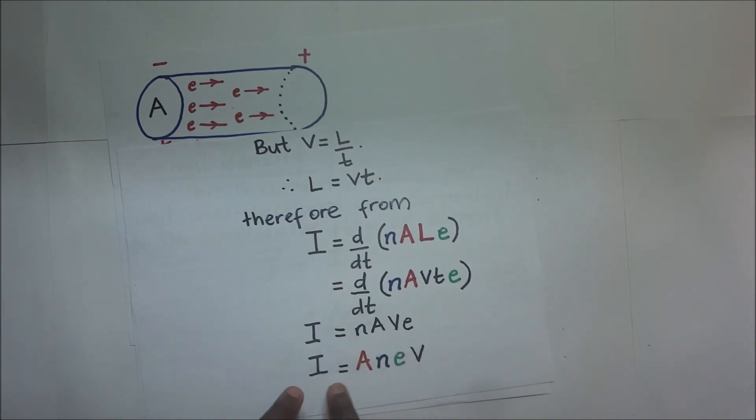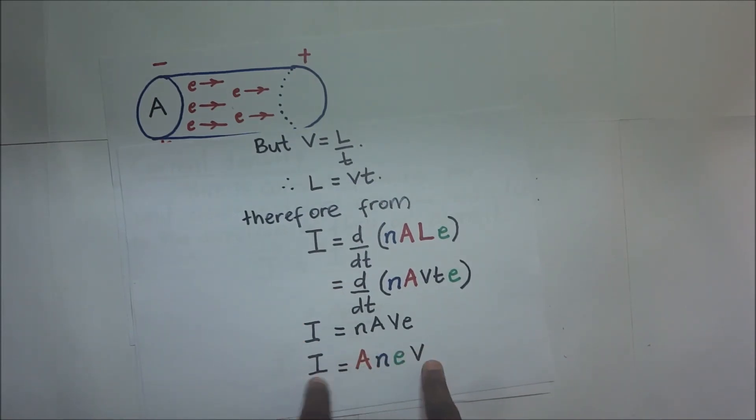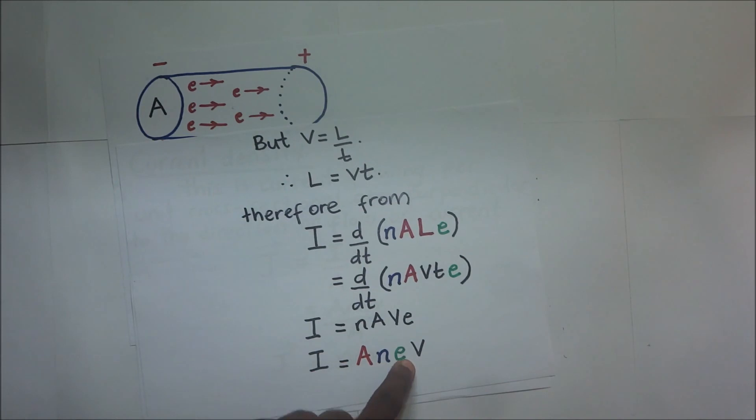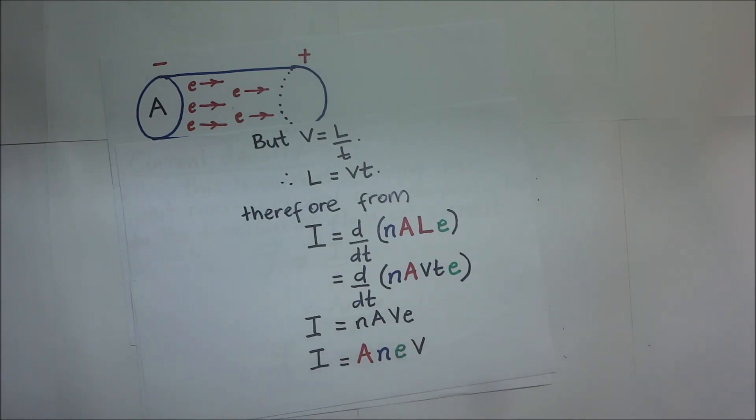So if we may rearrange it, current I equals NAVE, where A is the cross-sectional area of the conductor, N is the number of electrons, E is the charge on each electron, and V is the drift velocity. So that is how we derive that expression.